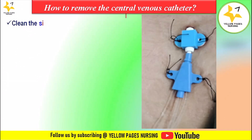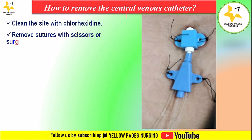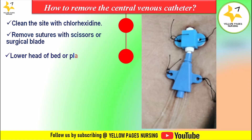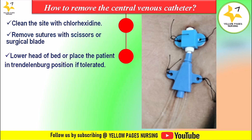Clean the site with chlorhexidine. Next, carefully remove the sutures using scissors or a surgical blade without harming the surrounding site. Then lower the head of the bed or place the patient in the Trendelenburg position if tolerated.